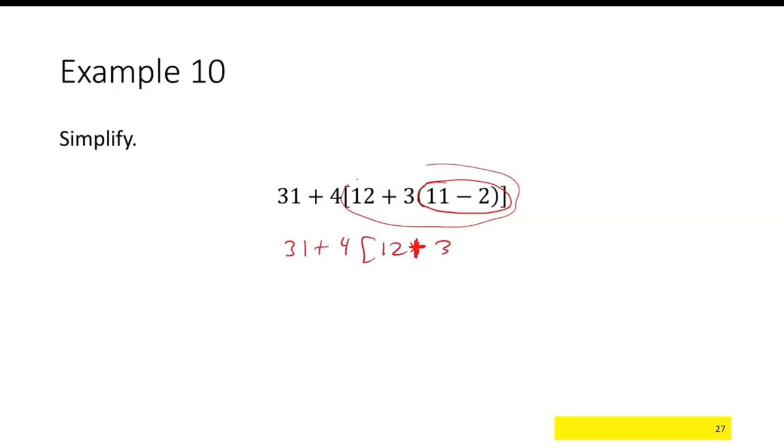12 plus 3 times 11 minus 2 is 9. And so 3 times 9 would be next. 31 plus 4 times 12 plus 27. And then inside the bracket is 12 plus 27, so 39.